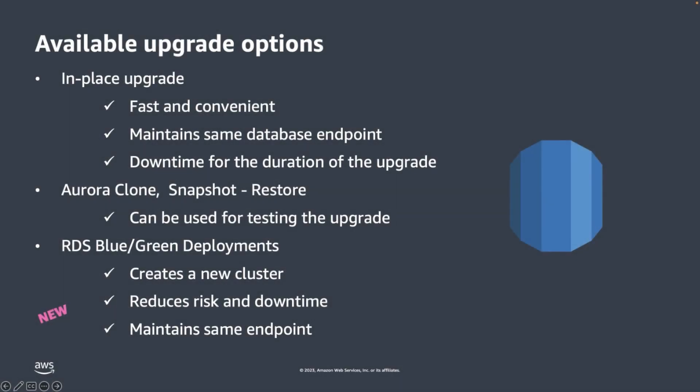Amazon Aurora provides customers with various options to perform both major and minor version upgrades. In our last video, we talked about the upgrade options available for Aurora MySQL — the in-place upgrade, the snapshot and restore method, and the cloning option. For the in-place upgrade, it is a fast and convenient upgrade method that maintains the same endpoints, but a downside is that you will experience downtime during the upgrade, which can be long and unpredictable and risk the safety of your production workloads.